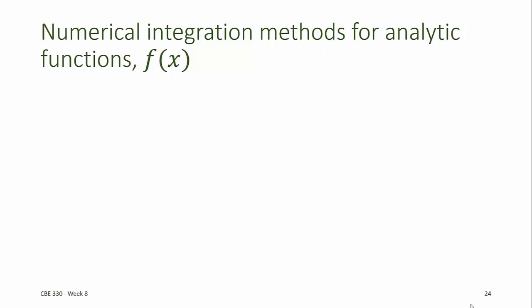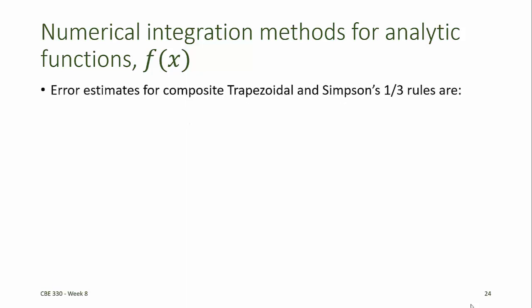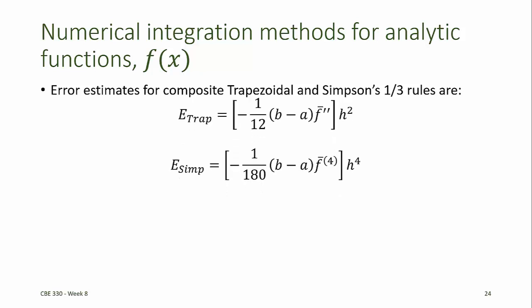The Newton-Cotes formulas can be used to integrate data, and they can also be used to integrate an analytic function f of x, if it's easier to numerically integrate than to find the integral analytically. When using the trapezoidal rule and Simpson's 1/3rd rule, estimates for the error can be obtained. The estimated error for the trapezoidal rule is proportional to h squared, and the estimated error for Simpson's 1/3rd rule is proportional to h to the 4th.